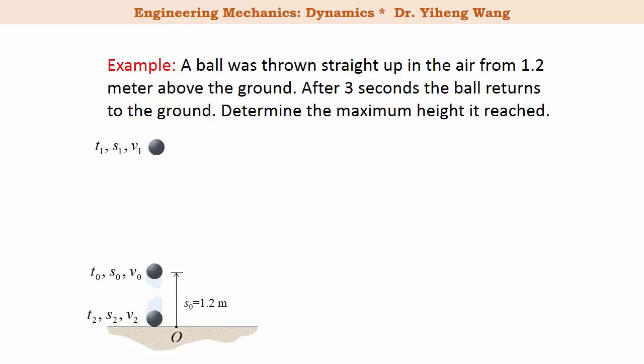And what we are asked to solve, the maximum height of the ball is s₁. So let's take a look at what we know and what we don't. Here I listed the known coefficients with green backgrounds and unknown ones with pink backgrounds. Particularly, although it was not given in the problem statement that v₁ is 0, we know that from basic knowledge of physics.